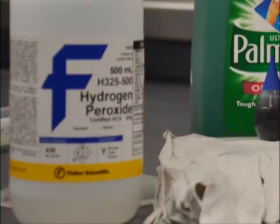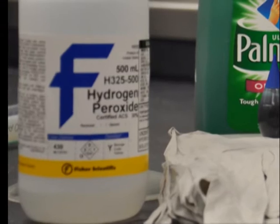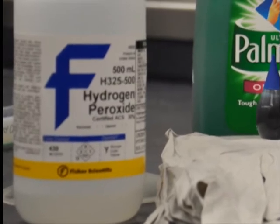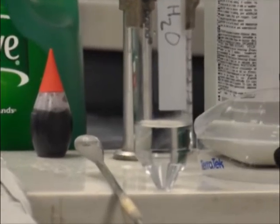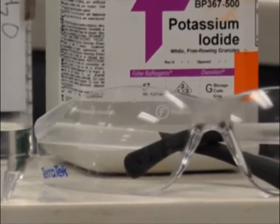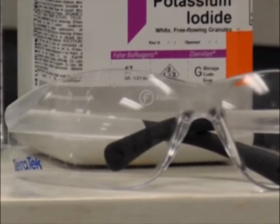In this experiment, we will be making elephant toothpaste. To follow along at home, you will need aqueous 30% hydrogen peroxide, liquid dish soap, liquid water, and solid potassium iodide. To protect your hands and eyes, you should also wear goggles and gloves.